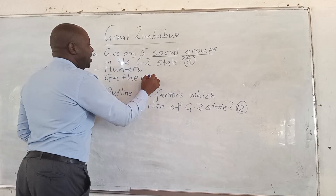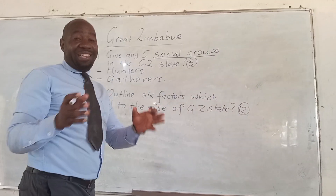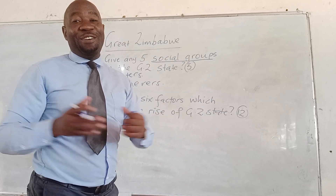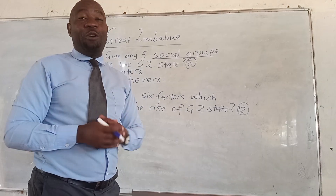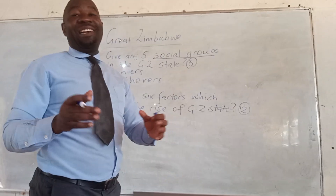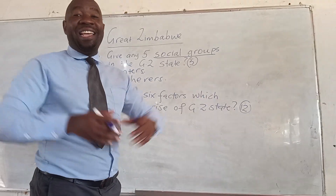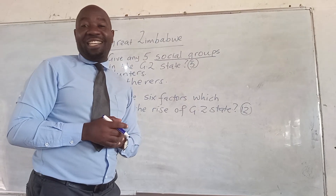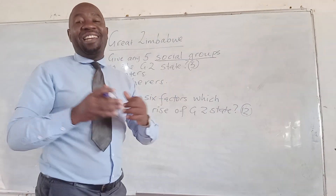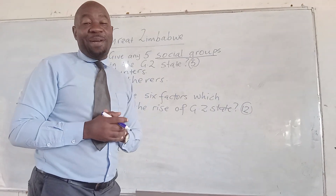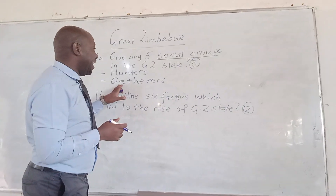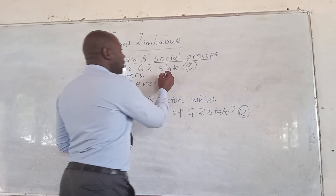Then we also had another social group which was called the Gatherers. These were involved in the gathering of fruits, gathering of edible bulbs, gathering of honey, gathering of insects, gathering of termites. They were known as the Gatherers.